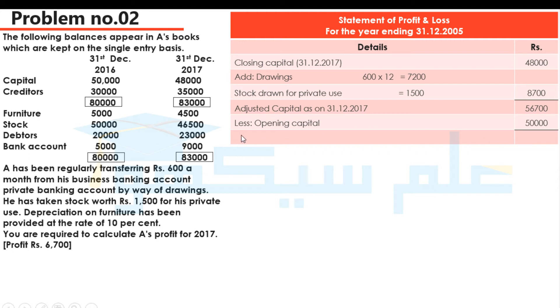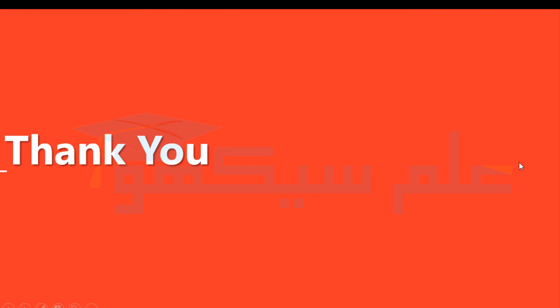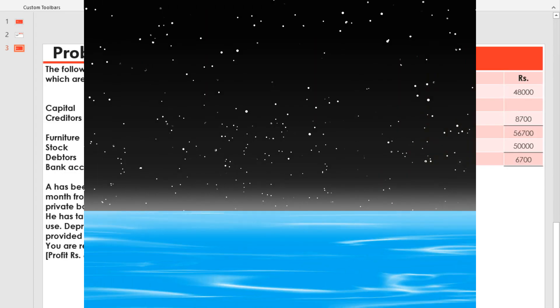If we subtract Rs. 50,000 from Rs. 56,700, we will have the remaining balance — profit during the year: Rs. 6,700. This is our answer. Thank you so much.